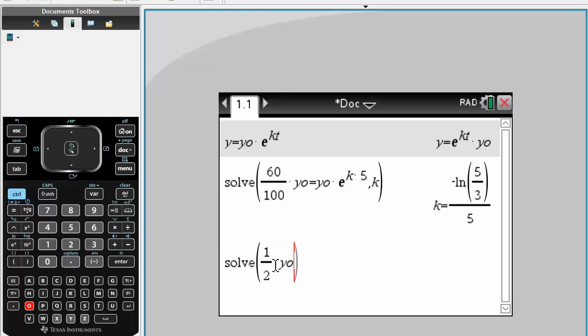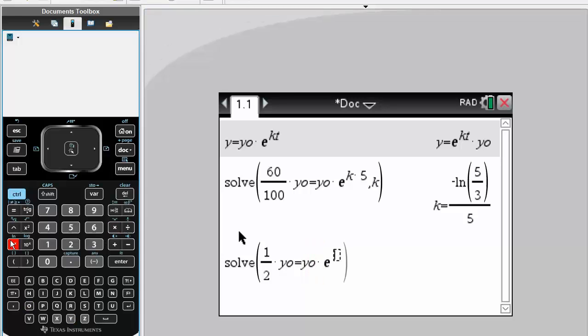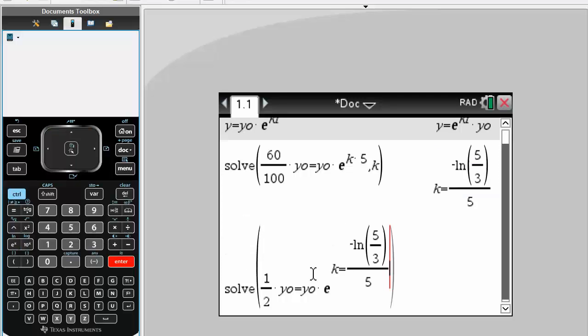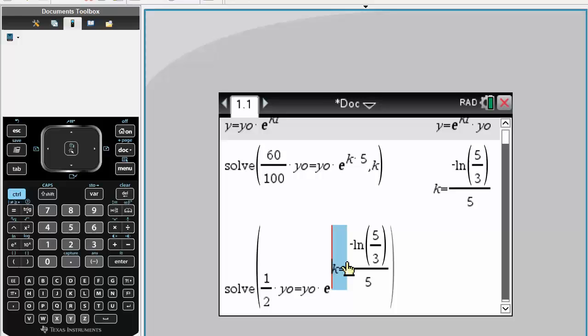Times y original, which would equal y original times e, our k value would be this. You have to remove k equal though, so just delete that, times t. And we want to solve for t, so like this, simply hit enter.